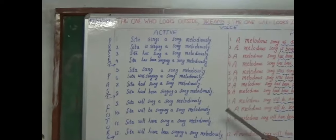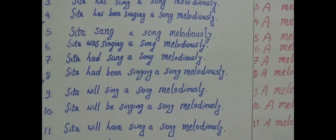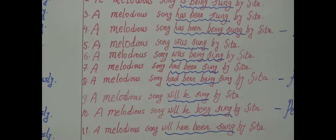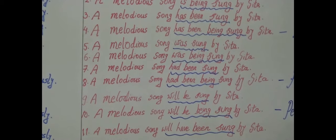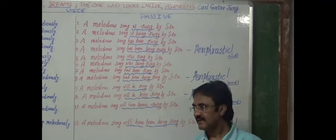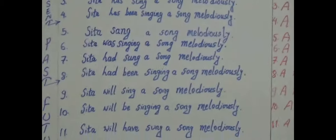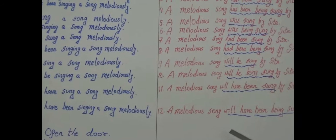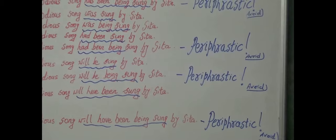Now for future: 'Sita will sing a song melodiously' → 'a melodious song will be sung.' 'Will sing' becomes 'will be sung.' Future continuous: 'Sita will be singing a song' → 'a song will be being sung by Sita' — too many verbs employed to convert to passive. Better to avoid. It exists in grammatical structures but is not used in colloquial English. Future perfect: 'Sita will have sung a song' → 'a song will have been sung by Sita.' Future perfect continuous is also periphrastic — avoid it.